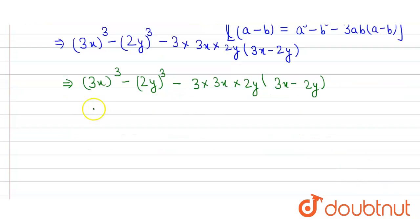Here we get 3³, which equals 3 × 3 × 3 = 27, and then x³. Then 2³ = 8, so it will be 8y³.